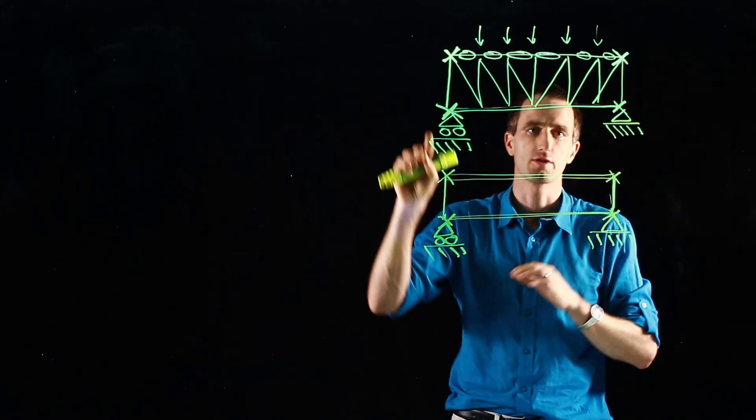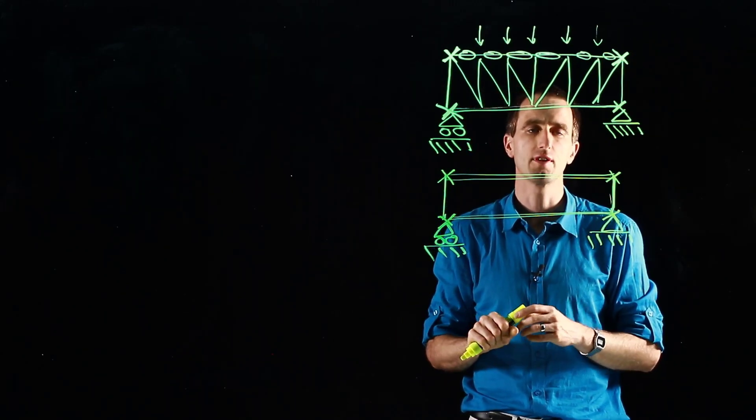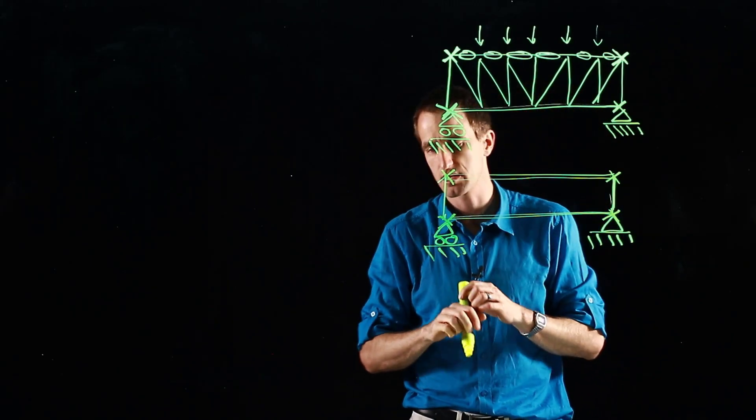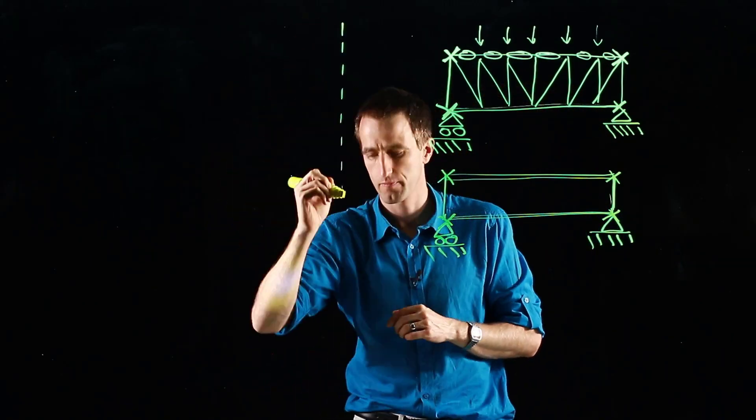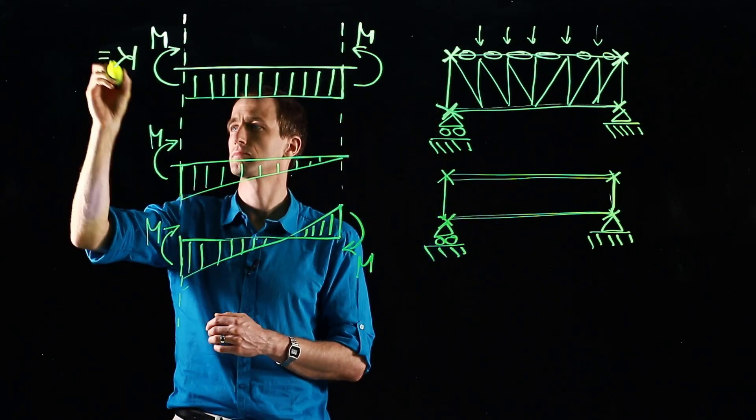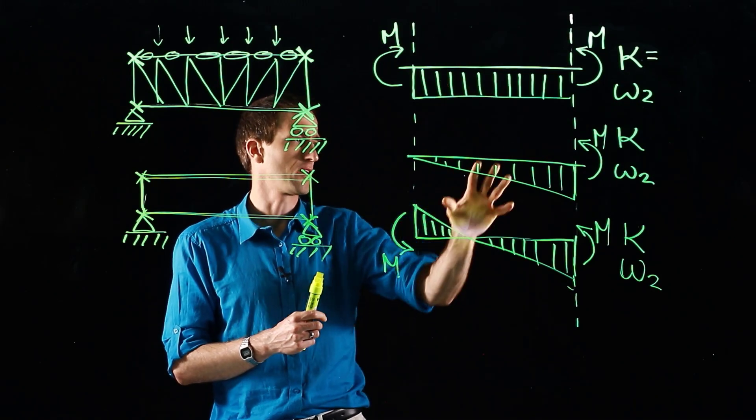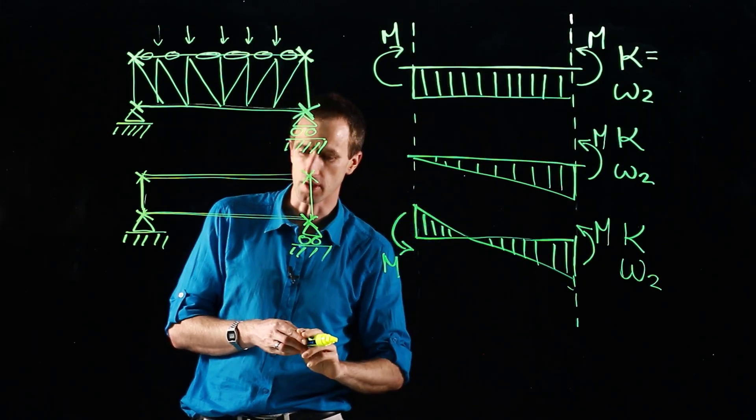So what I'm going to be doing now is going through and sketching some different bending moment diagrams and then we're going to have a look at how do they influence capacity and where does that get accounted for. Okay I've sketched out three different bending moment diagrams here and we're going to work out the factors that go with it.